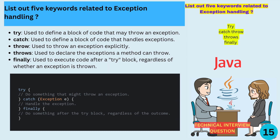Try: used to define a block of code that may throw an exception. Catch: used to define a block of code that handles exceptions. Throw: used to throw an exception explicitly. Throws: used to declare the exceptions a method can throw. Finally: used to execute code after a try block, regardless of whether an exception is thrown.